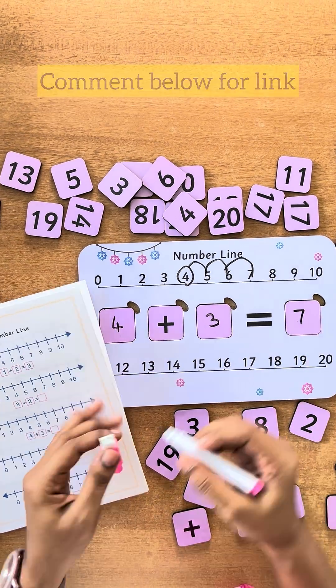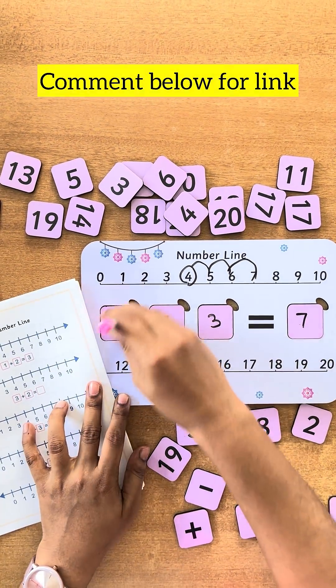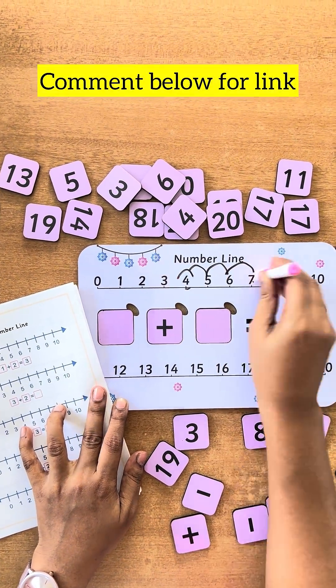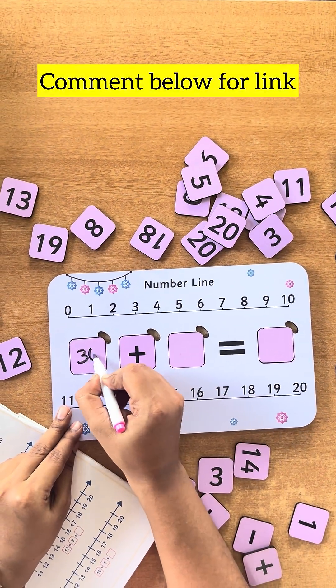Here the frog jumps three steps forward and the number it stops would be the answer. The board comes with wipe and clean sketch. Now let's try with bigger numbers.